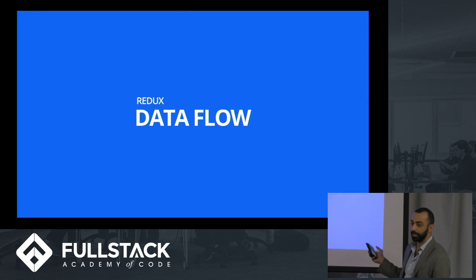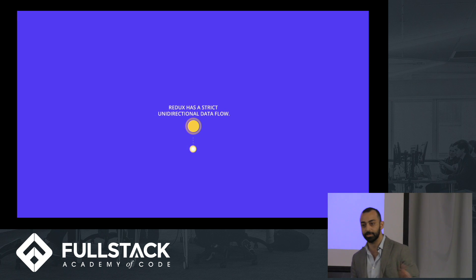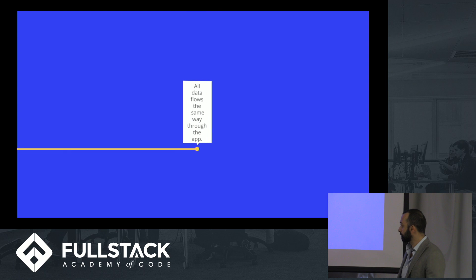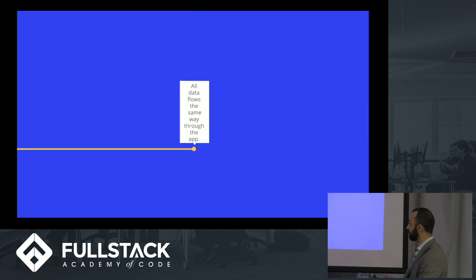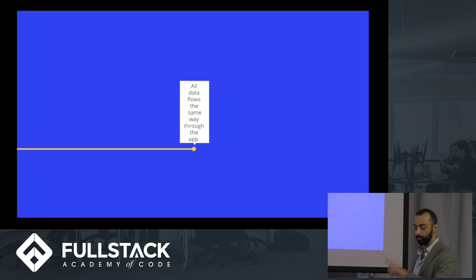Let's talk about the data flow in Redux. It's unidirectional — everything done in Redux goes through the same lifecycle. All data travels through one point. It starts with an action that describes the change. The change goes to something called a store. The store puts that change into a function that reduces it and basically creates the next state. And this just goes on and on.